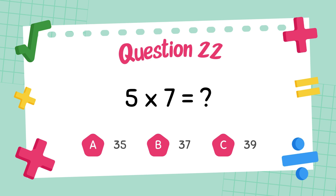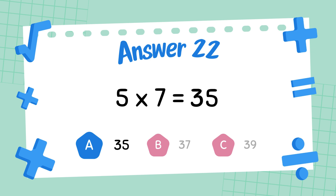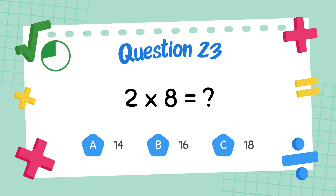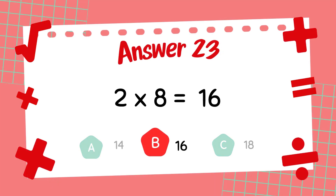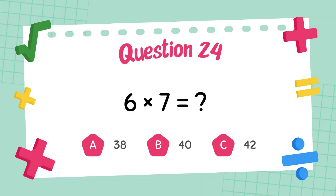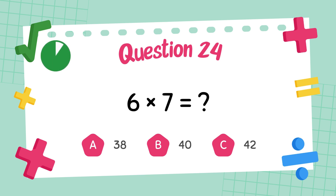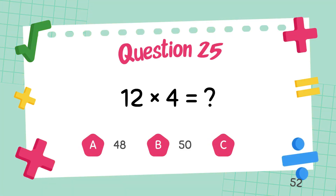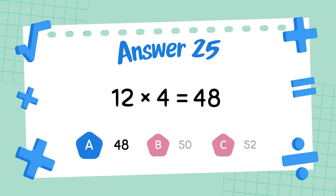What is 5 times 7? The answer is 35. What is 2 times 8? The answer is 16. What is 9 times 4? The answer is 36. What is 6 times 5? The answer is 30.